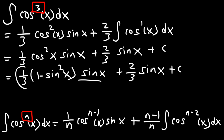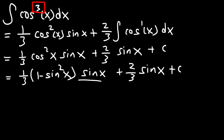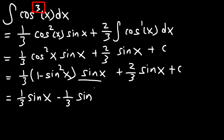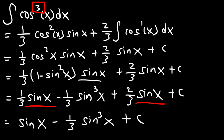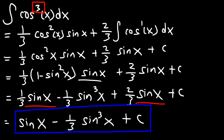I'm going to distribute 1 third sine x to 1 minus sine squared. So it's going to be 1 third times 1 times sine x, which is simply 1 third sine x, and then 1 third times negative sine squared times sine x, which is negative 1 third sine cubed x. Now let's combine like terms: 1 over 3 plus 2 over 3 is 3 over 3, which is 1. So the final answer is sine x minus 1 third sine cubed x plus c. This is the indefinite integral of cosine cubed x dx.